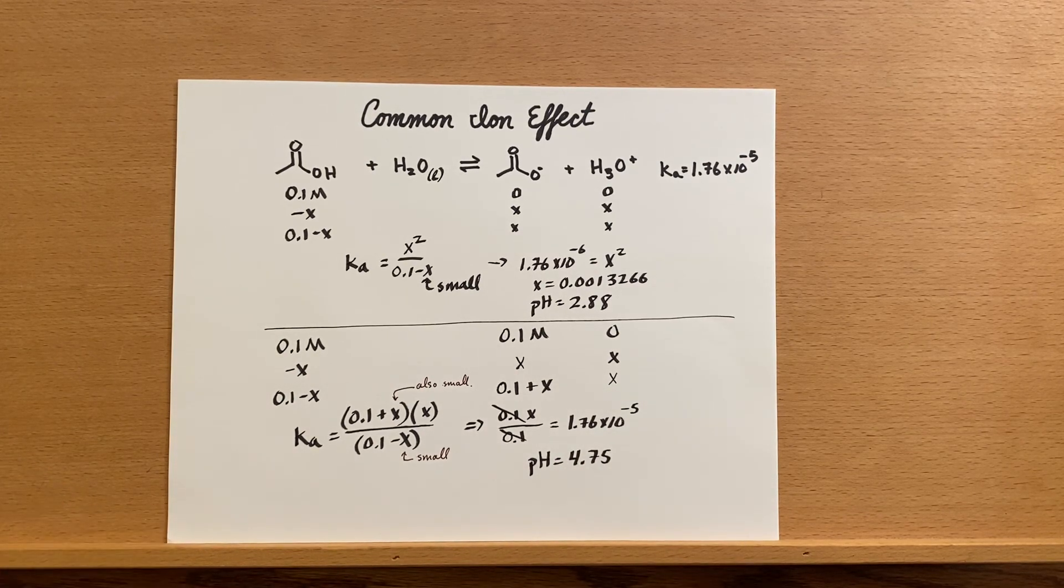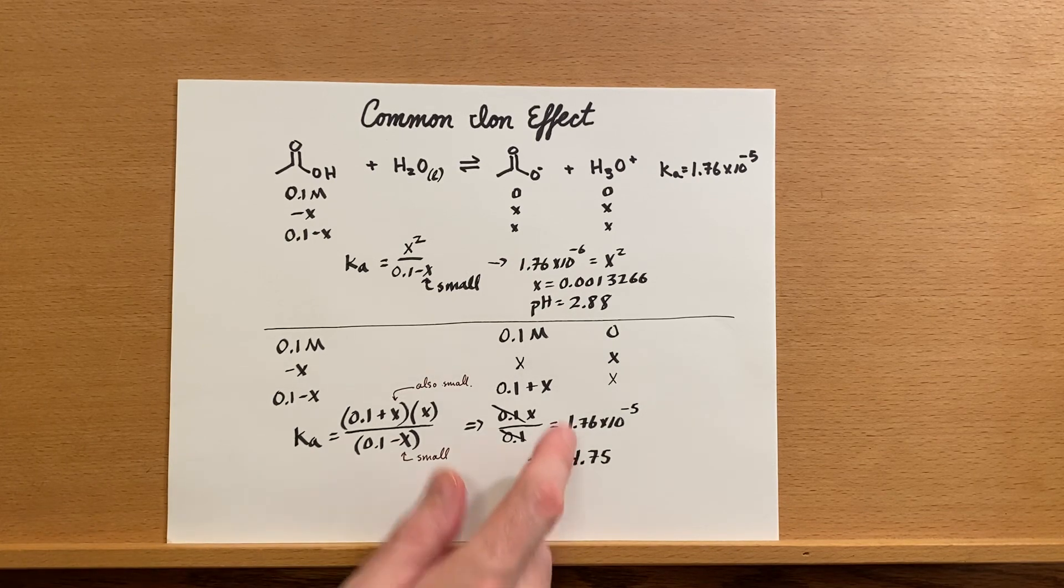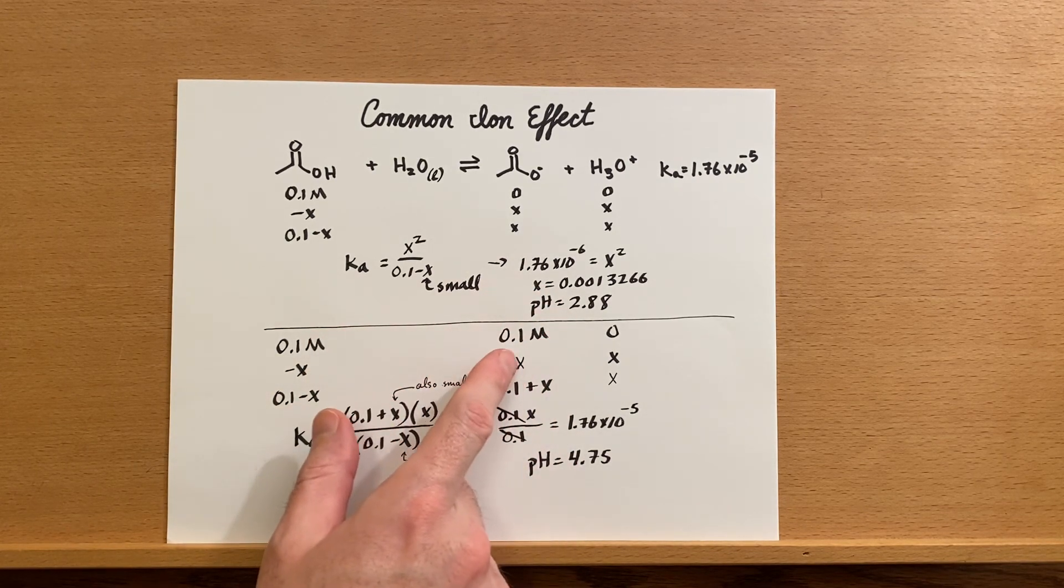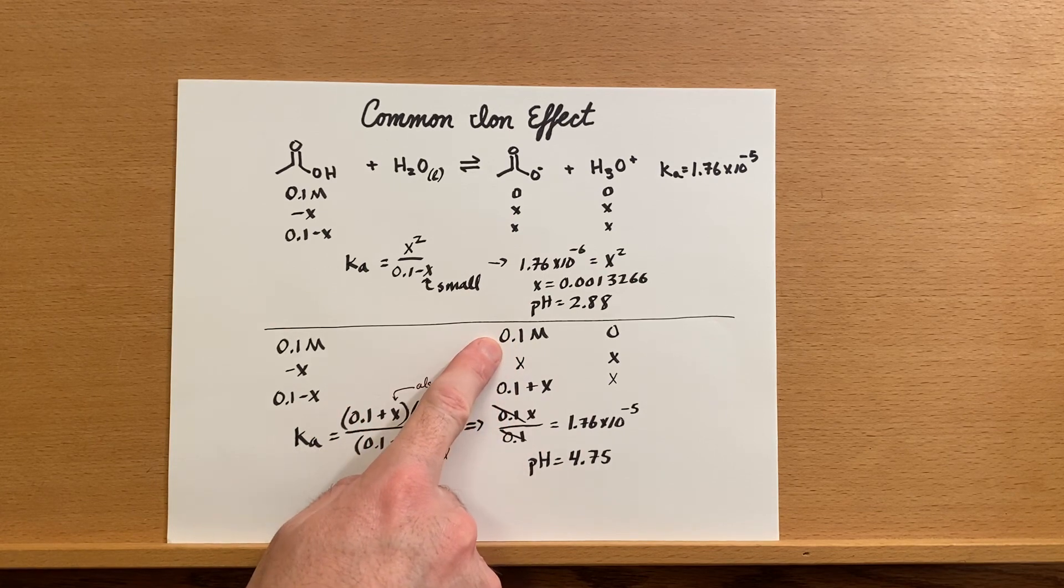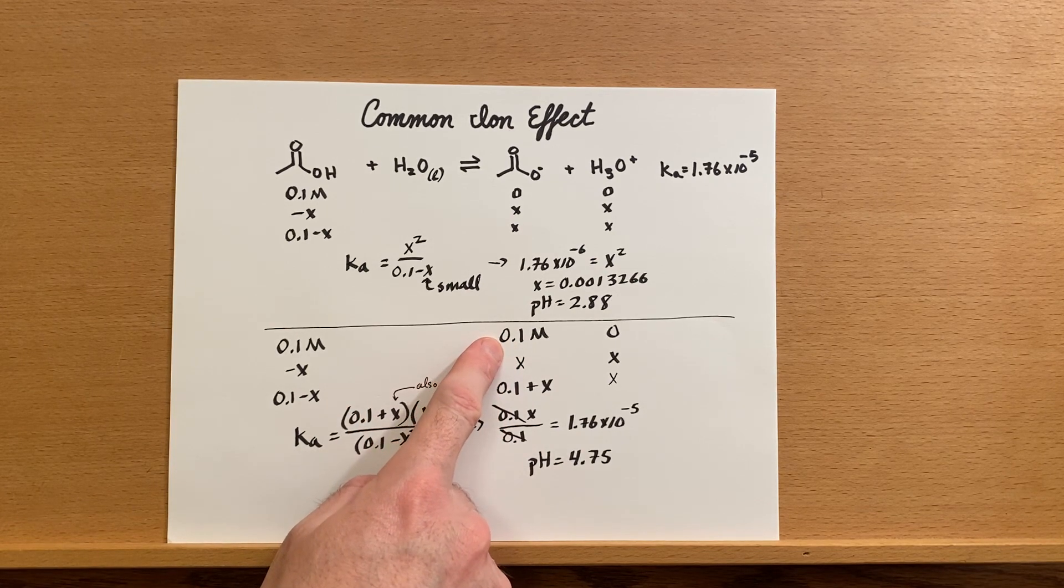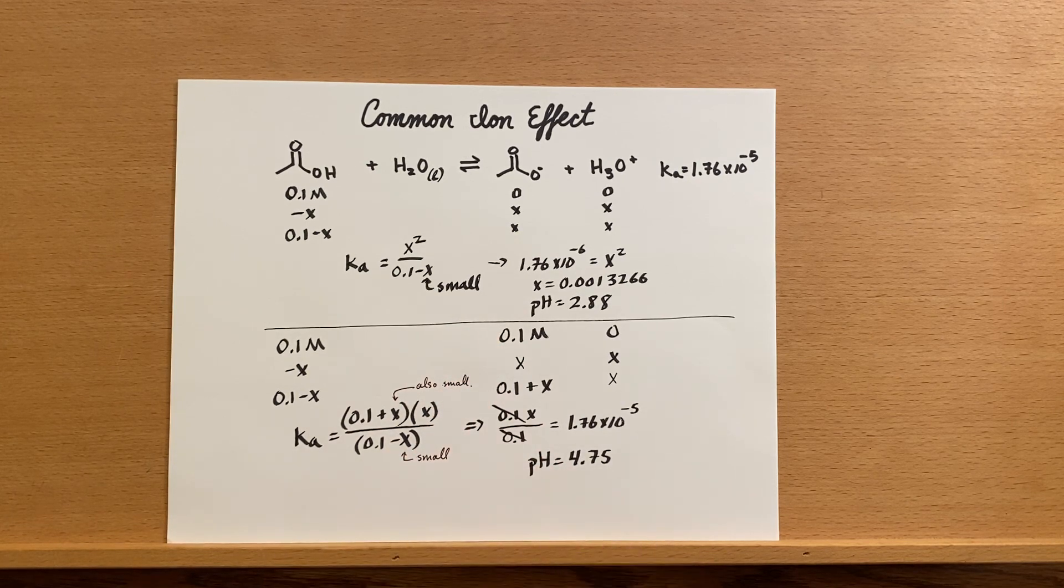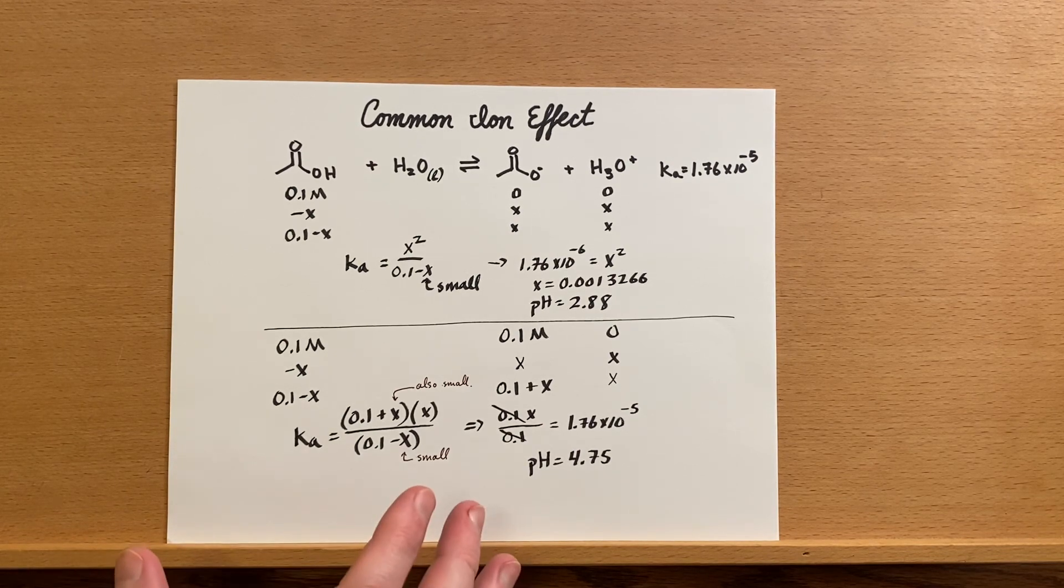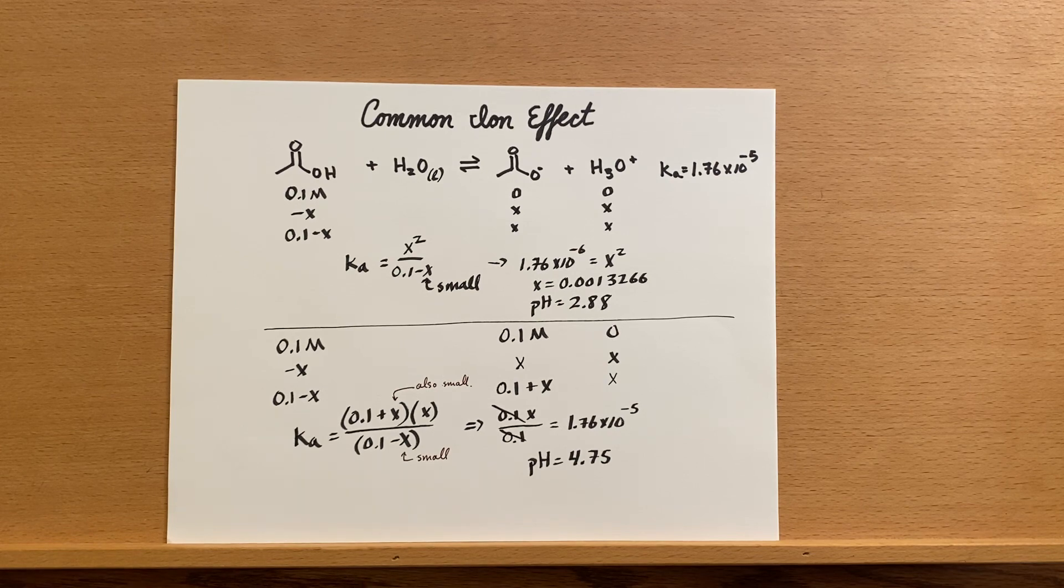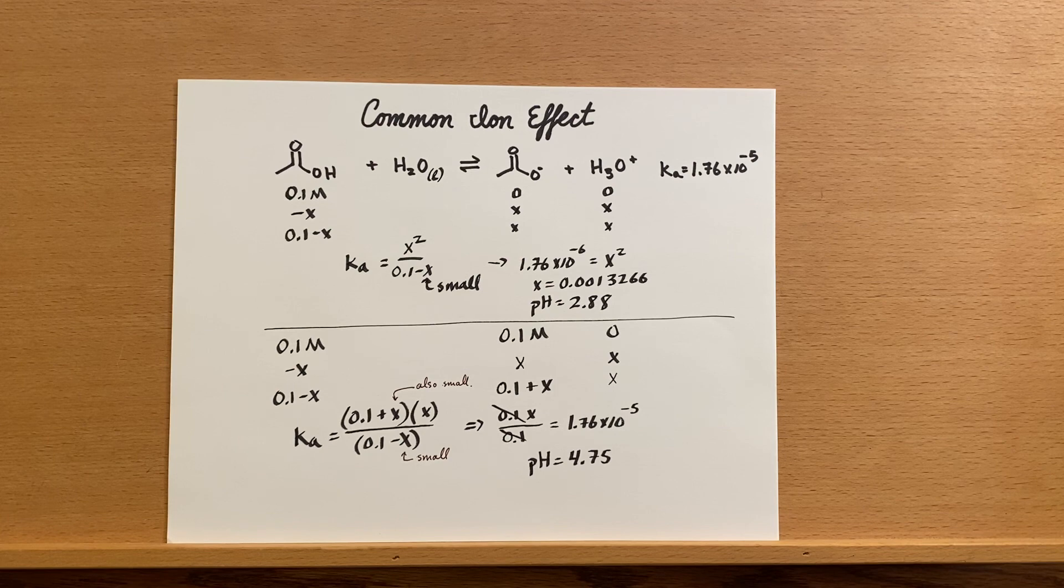It should make sense that this pH is higher than up here because in this solution I've added base to the mixture, and that should raise the pH because bases have a higher pH. So this is just a little bit about the common ion effect. This isn't the only place it comes up, but it is one of the places it comes up, and it leads us into our next discussion on buffers.